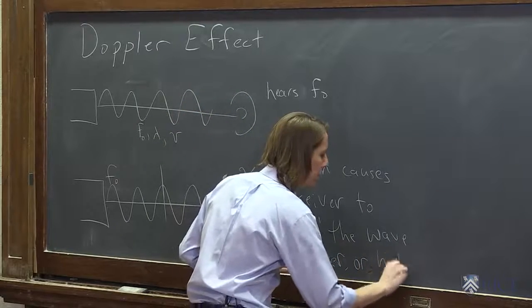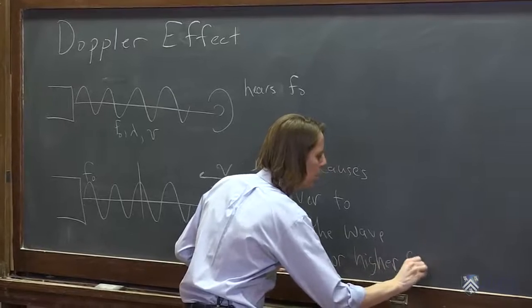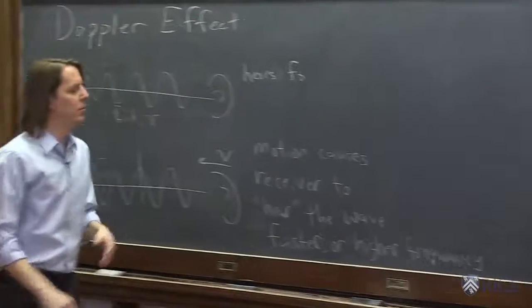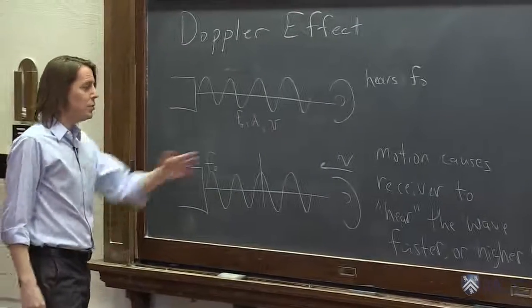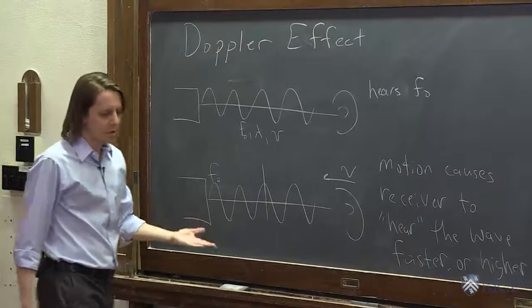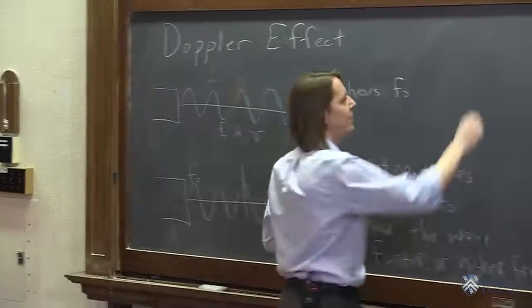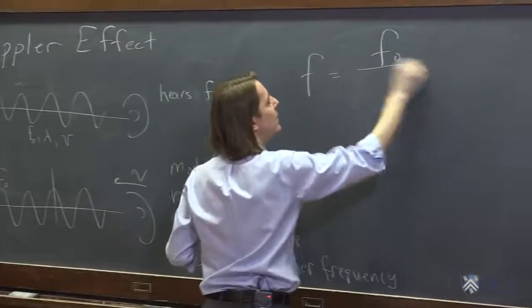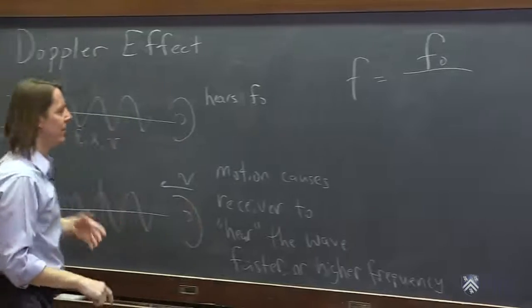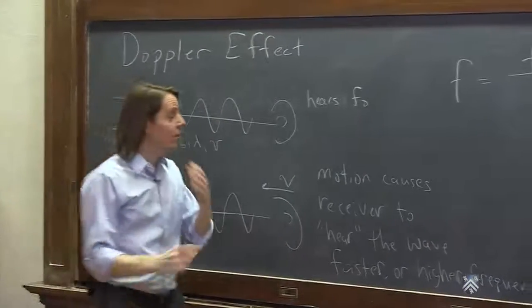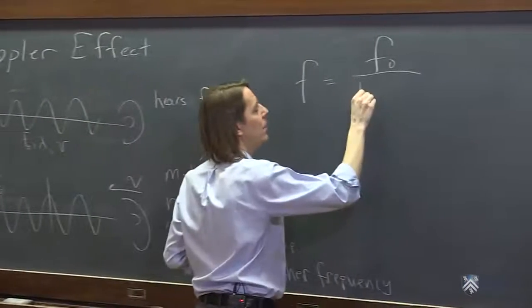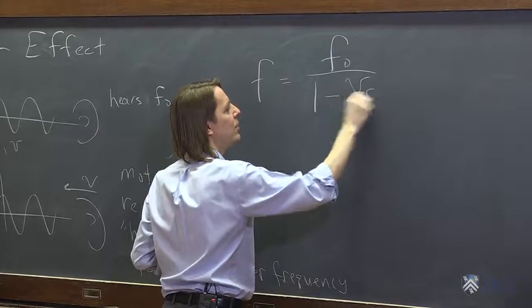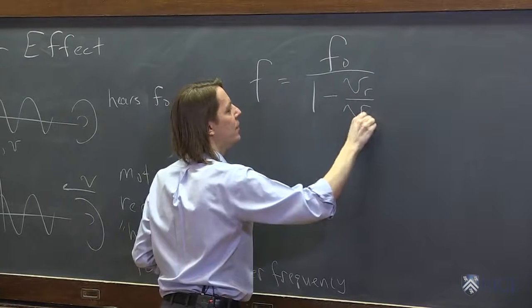You will actually hear a higher tone. The equation we have for this is that the frequency you hear would be the frequency that was emitted by the stationary object over a factor in the bottom: one minus the velocity of the receiver over the velocity of sound.